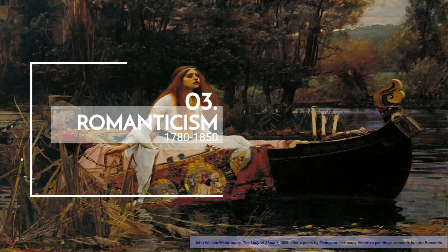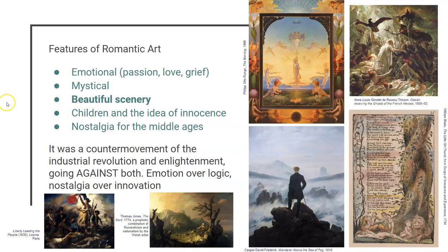At the same time that neoclassicism was going on, romanticism was also happening — from 1780 through 1850, both in Europe and in America. It's important to understand that the Enlightenment was going on at this time, which stands on the ideas that you can use logic and rationalism to create a better world. It's very focused on thinking for yourself, science, and figuring out better ways rather than looking back at tradition. We also had the Industrial Revolution going on, bringing progress but also poor working conditions.